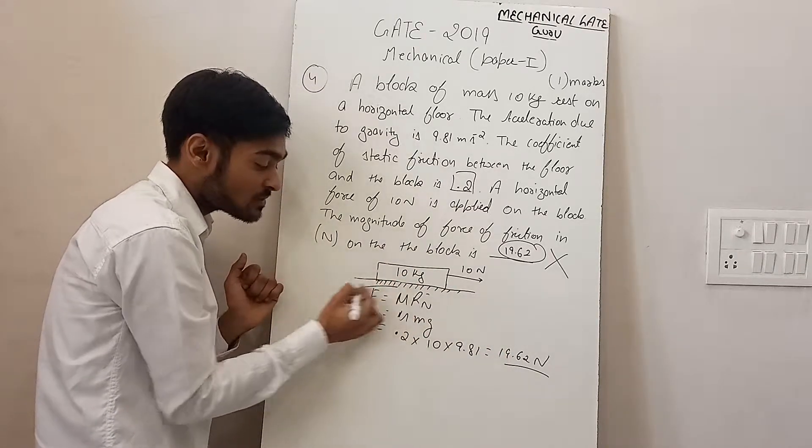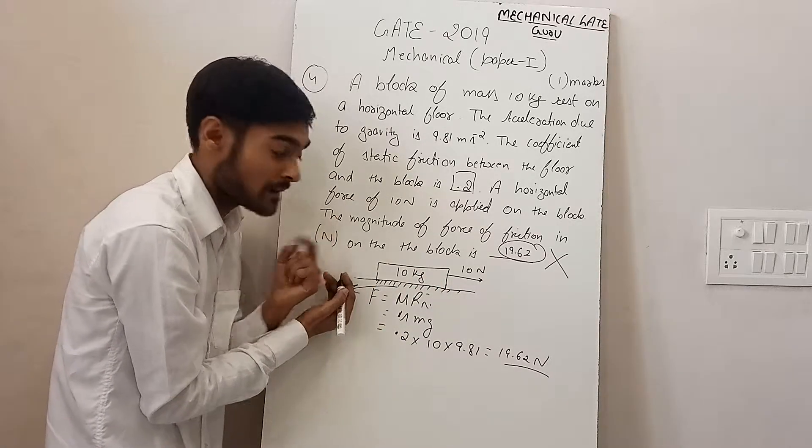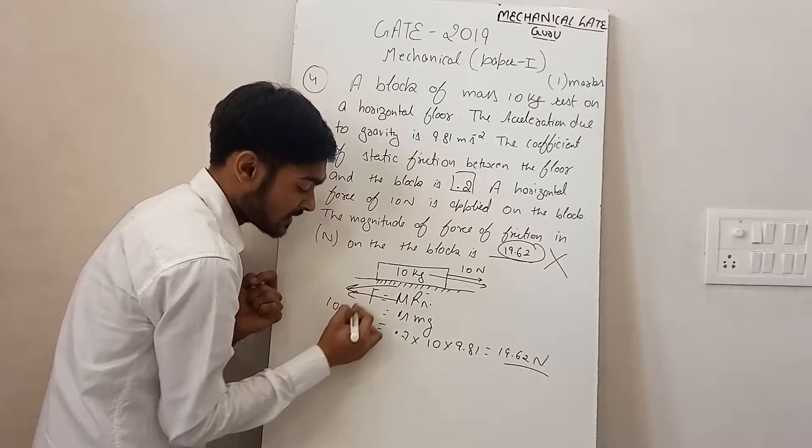So it's 19.62, but it is maximum. If you have 10 N force, then friction force will be 10 N. Because friction force will increase.